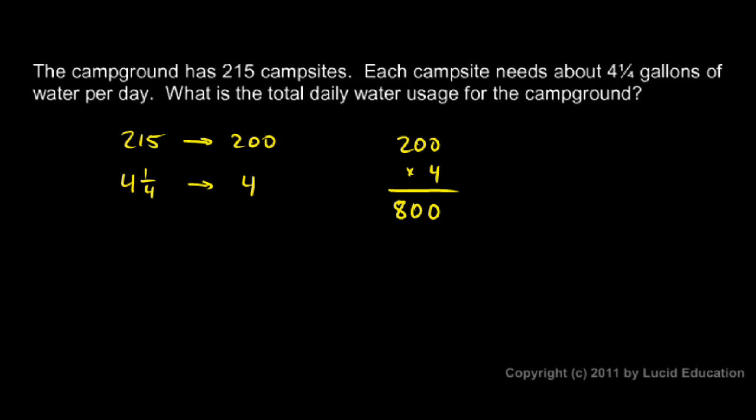Because a typical day in a campground would really involve approximations to these numbers, it makes sense to approximate these numbers, round them to numbers that are easier to work with, and get an approximate answer. In this case, 800 gallons per day.